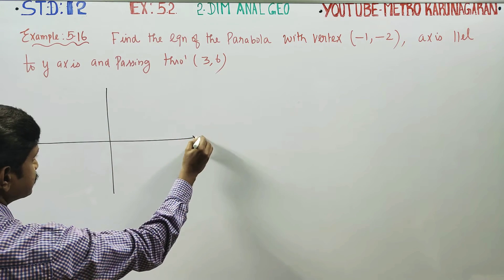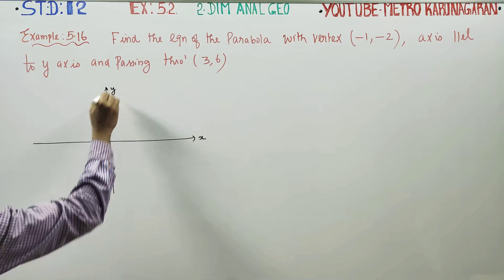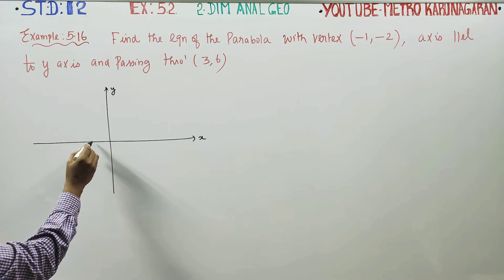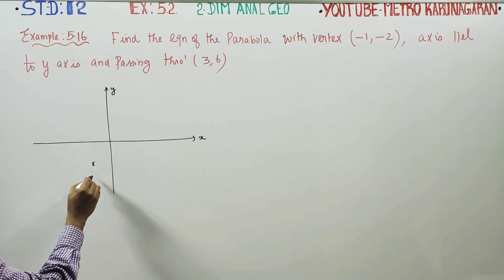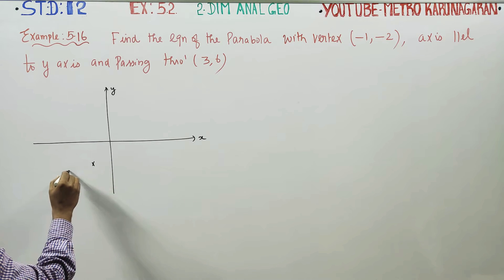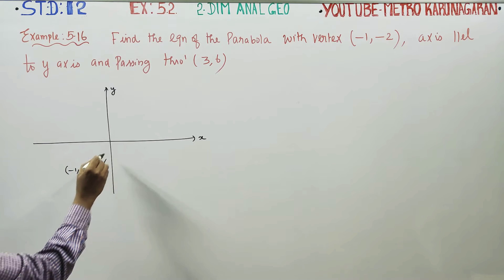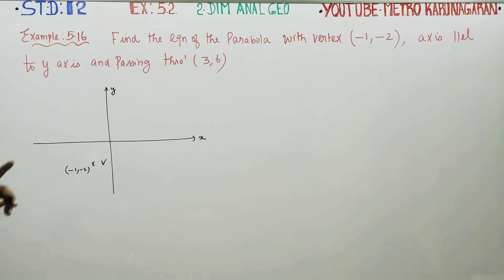First of all, I will fix my x-axis and y-axis. Then we will locate minus 1 comma minus 2. This is my minus 1 and this is my minus 2. This will be our vertex V. Then it passes through 3 comma 6. That is another clue.